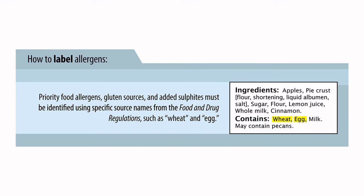For priority allergens, you must use the prescribed name — you can't use Latin names like Triticum aestivum, or ovid secretions for eggs, or call walnuts by their Farsi name 'marzigerdu.' You must use the prescribed plain language name set out in the Food and Drugs Regulation. This is especially relevant for products being imported into Canada where labels are being translated — you have to revert to the prescribed plain name. You can't call milk 'cow secretions' or anything unusual; it has to be called milk.